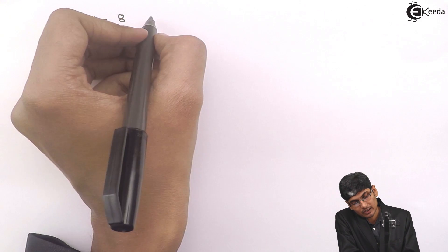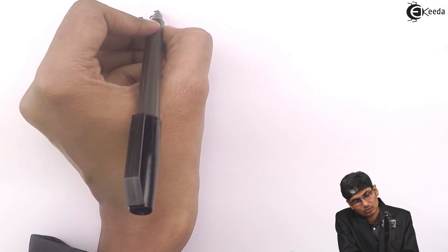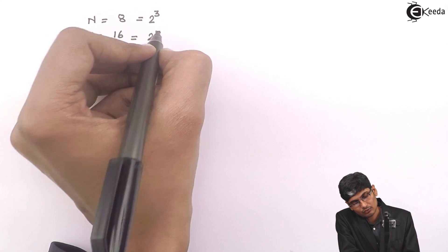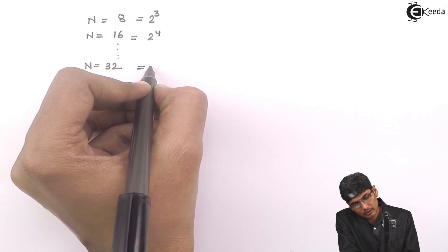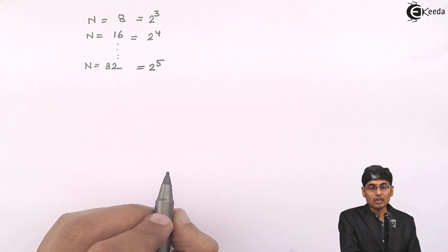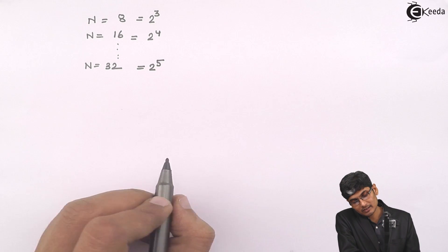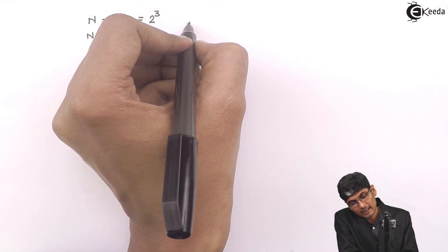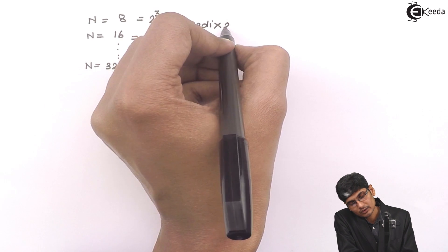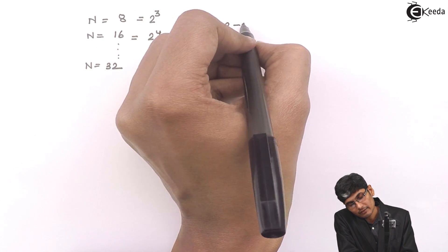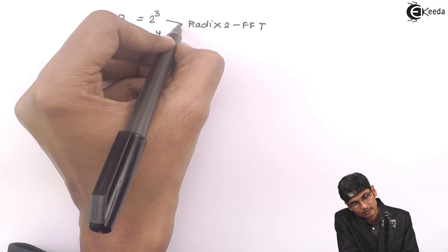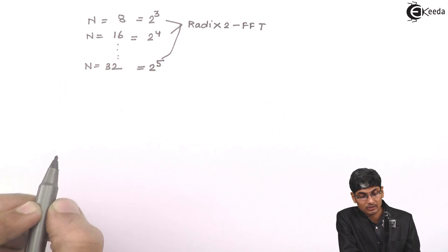For example, I can write 8 as 2 raised to 3, 16 as 2 raised to 4, and 32 as 2 raised to 5. So I can always produce a radix-2 FFT for these values of sequences.